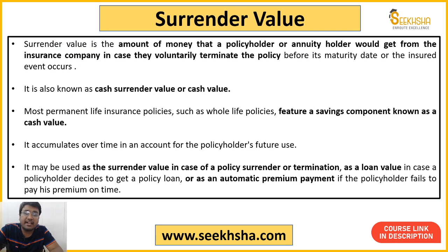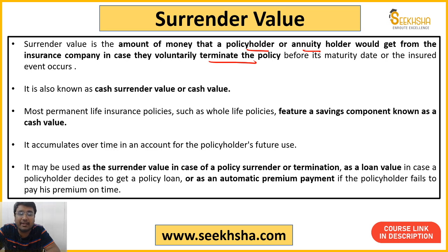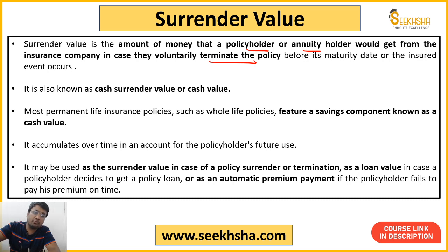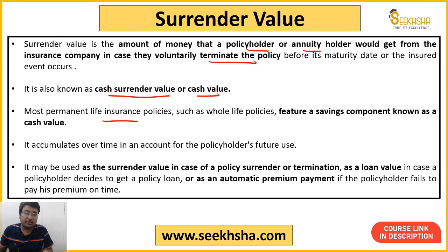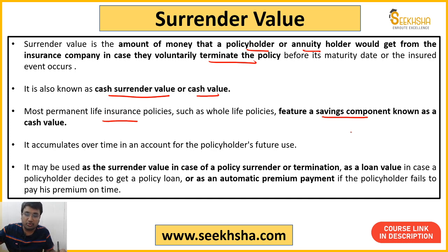Surrender value is the money that a policy holder or annuity holder receives if they terminate their policy. If you terminate your policy before the maturity date, the money you get is called Surrender Value — also known as Cash Surrender Value or Cash Value. This Cash Value is mainly found in permanent life insurance policies, like whole life policies, where there is a saving component. In this component, cash accumulates in the policy holder's account over time, and this accumulated cash is used as surrender value when you terminate the policy.